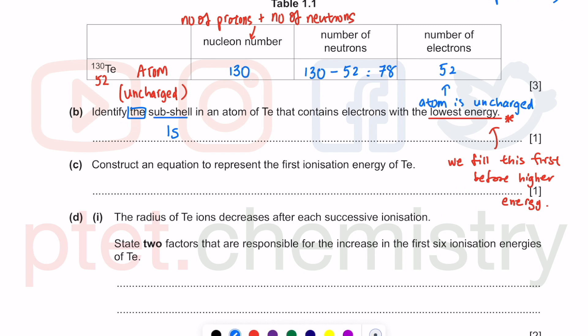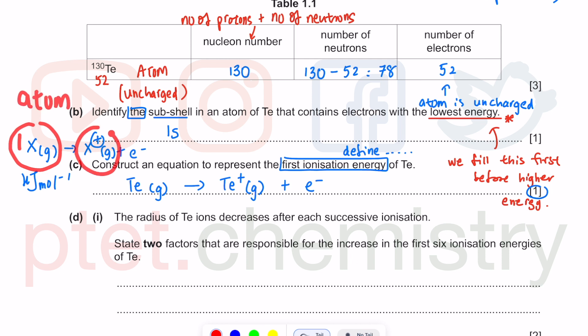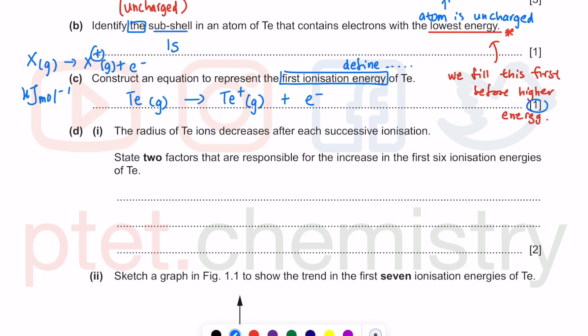Part c: Construct an equation to represent the first ionization energy. This is basically about the definition, but instead of a three mark definition, they give you a one mark equation. The general equation is X gaseous atom giving X plus gaseous cation with plus one charge, losing one electron. It's the energy required to remove one mole of electrons from one mole of gaseous atoms to form one mole of gaseous ions.